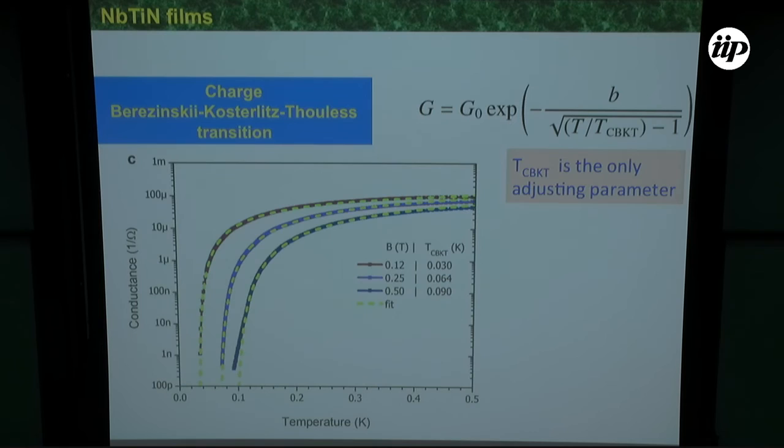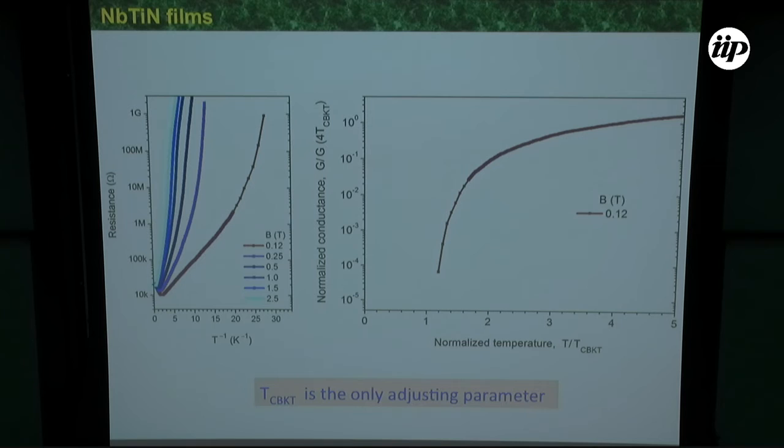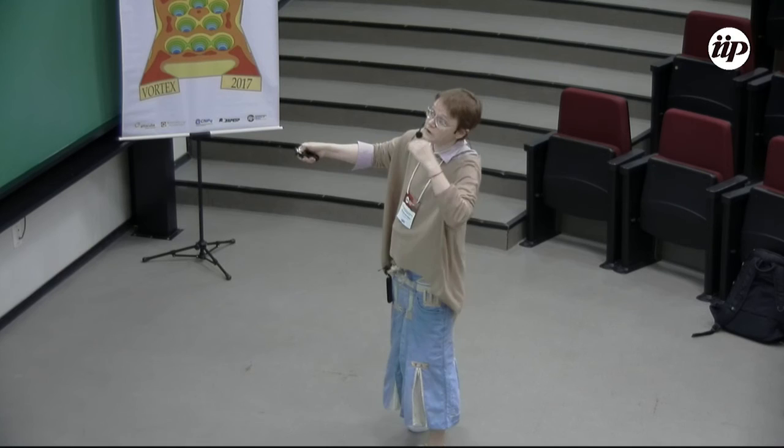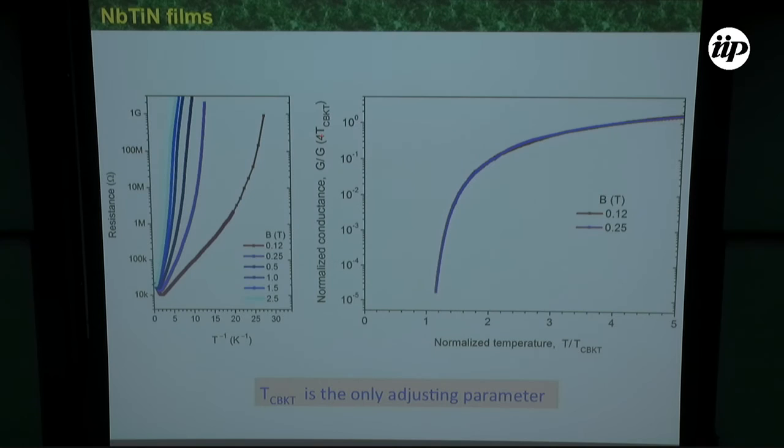So this is charge Berezinskii-Kosterlitz-Thouless transition. But we know even more about all this stuff now. Now I will forget about any kind of formulas. What I am doing, I am just doing some normalization. I have chosen one temperature for each curve, which is measured at different magnetic fields. And after that, all these curves, I also will normalize at some point. I have chosen here a temperature four times larger than this temperature. So no fitting parameters. No equations. Nothing. What I am doing is just normalization of all these curves, choosing only one parameter. Some tail appears. Pretty nice. By the way, it is four, means nothing, as you see, because if I choose five, it will be the same. Great. So all curves. For all curves, I have chosen just one parameter, which I call charge Berezinskii transition.